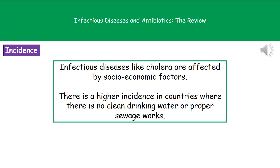Socioeconomic factors affect different diseases. Cholera is a prime example — it tends to spread when drinking water is contaminated by sewage. We see a much higher incidence of cholera in countries without a clean drinking water supply or proper sewage treatment. These tend to be poorer countries that lack the money to invest in sewage treatment programs and clean water supplies, creating a greater risk of sewage contaminating drinking water.